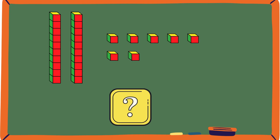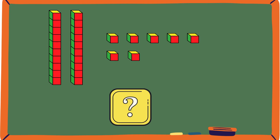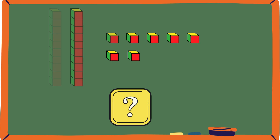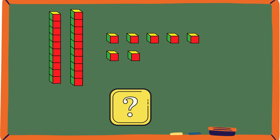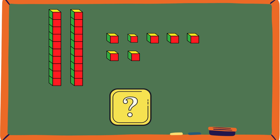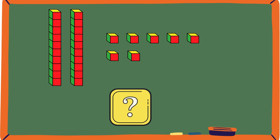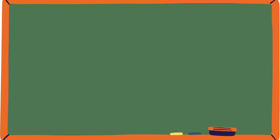Take a look at the blocks — what number do they stand for? Let's count: 10, 20, 21, 22, 23, 24, 25, 26, 27. That's correct, it's 27!